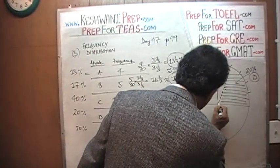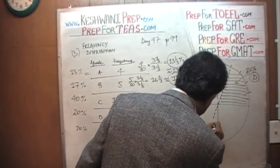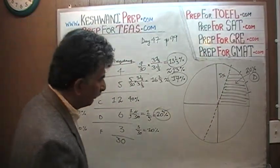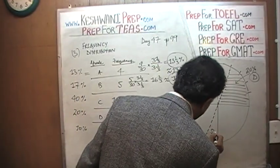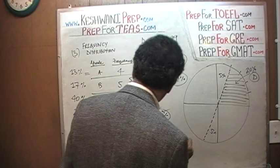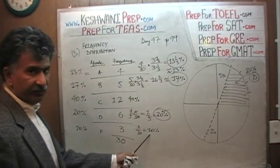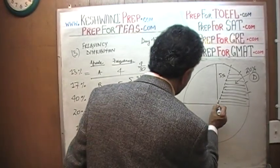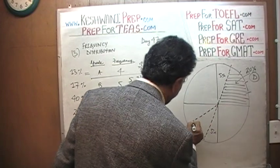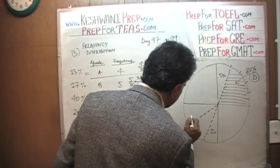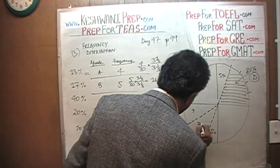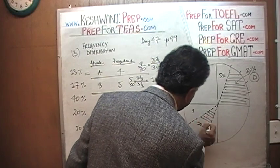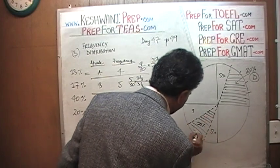If we extend the line out, the next portion along is also 5 percent. F is 10 percent, so halfway through the next quarter gives us 10 percent. That section represents our F.